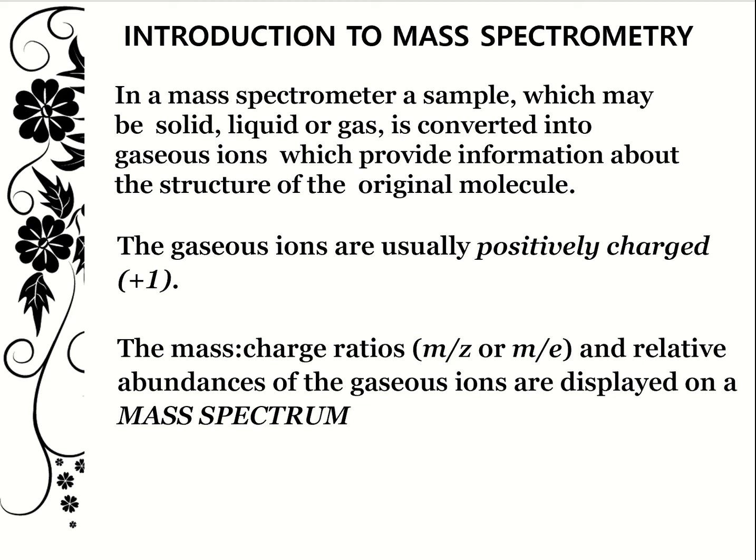The gaseous ions are usually positively charged. On the spectrum you will see a mass-to-charge ratio on the x-axis and the relative abundances of the gaseous ions on the y-axis.